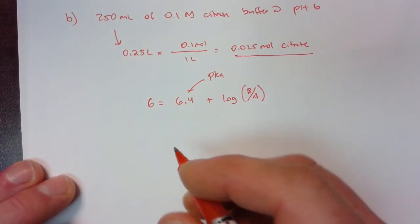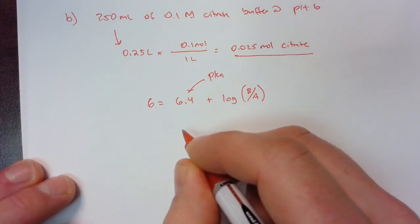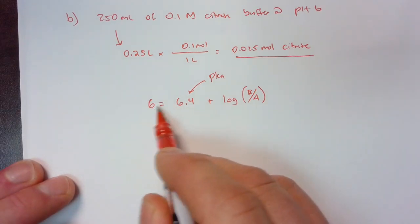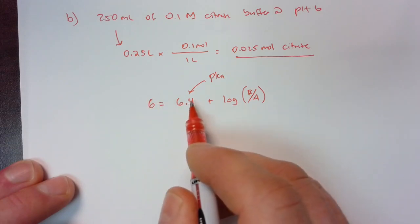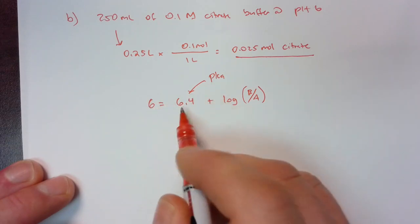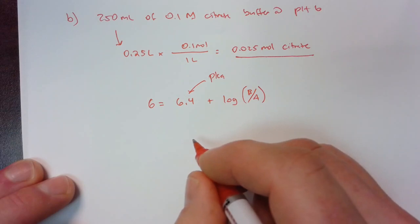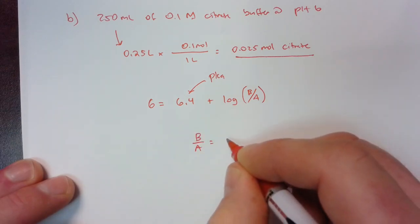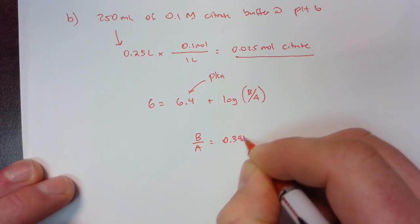We're going to do the same thing we did for the last problem. Solve for the ratio of base to acid. But as you can see, we can predict already there should be more acid than base because we're below the pKa in this case. And in fact, we see that the ratio of base to acid is less than one at 0.398.